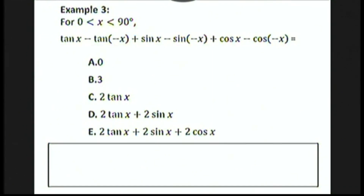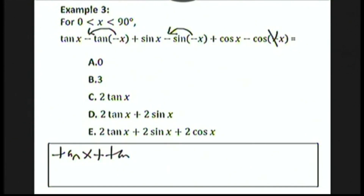Let's look at an example using these negative identities. For x between 0 and 90 degrees: tan x minus tan(−x) plus sine x minus sine(−x) plus cosine x minus cosine(−x). For tangent and sine, we can pull out the minus sign. For cosine, the minus sign just goes away. So this becomes tan x plus tan x plus sine x plus sine x, while cosine x minus cosine x cancels to 0. Finally, we get 2 tan x plus 2 sine x, which is exactly choice D.